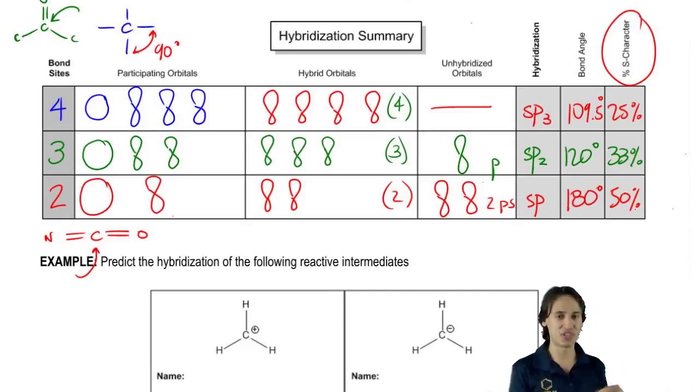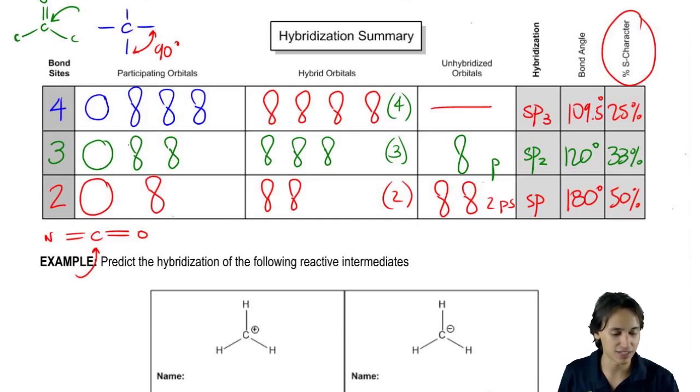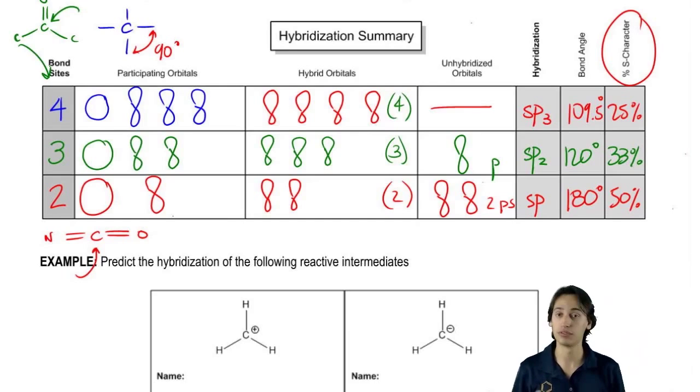Does that make sense? So this is your summary chart. This is what we're going to use to predict hybridization. And all you really have to do is look at the bond sites and that's going to tell you everything else you need to know.